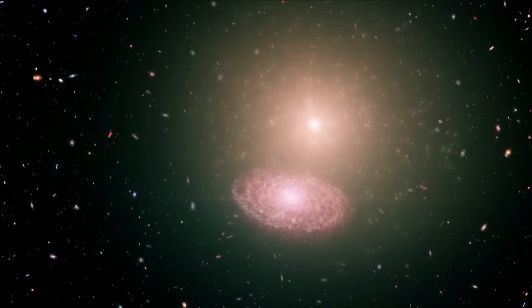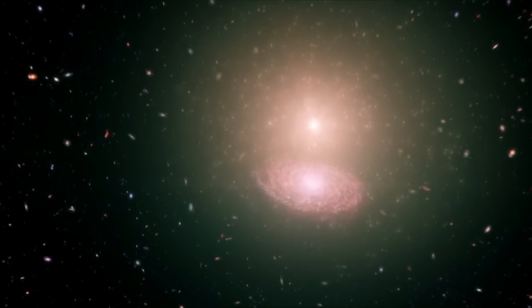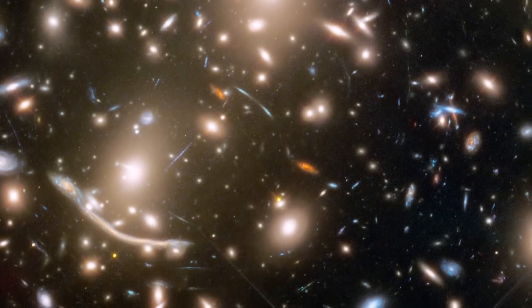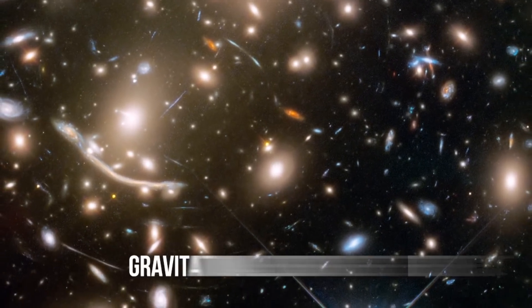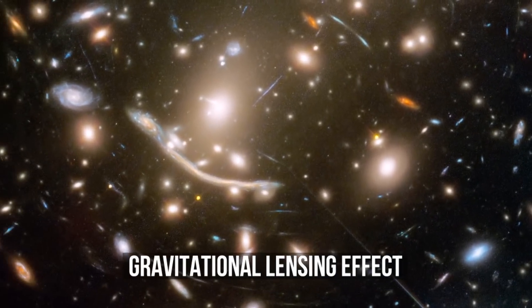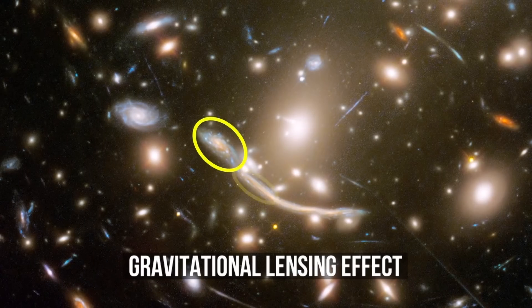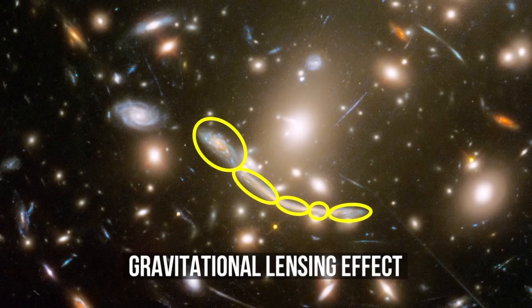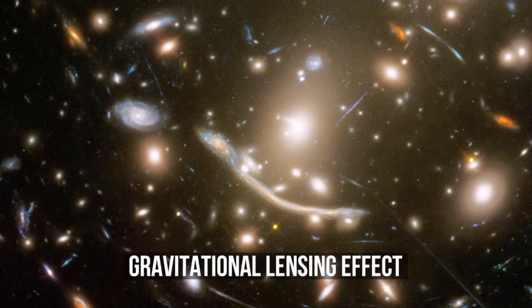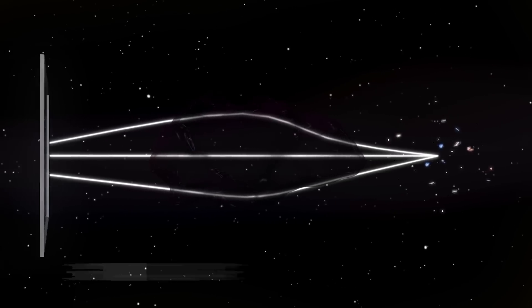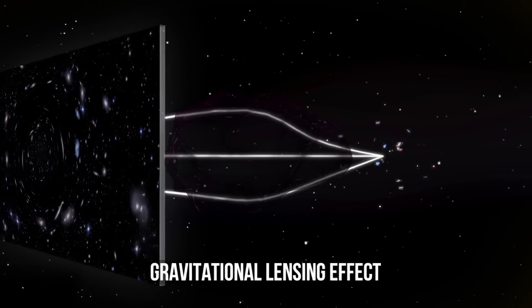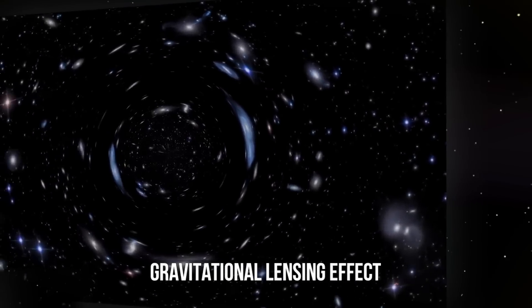Now, if you need some more tangible proof of its existence, check this footage. It looks like a space gallery of crooked mirrors. Some images of galaxies are greatly distorted. The others resemble multiplied reflections. All of these phantoms are products of dark matter. Its invisible mass creates the gravitational lensing effect when everything in close proximity gets deformed.